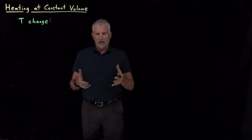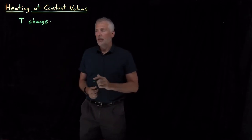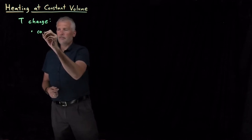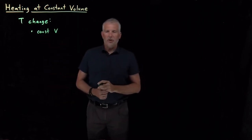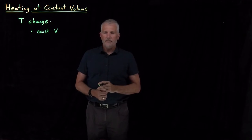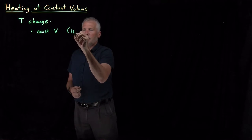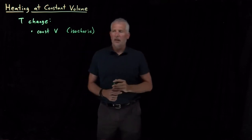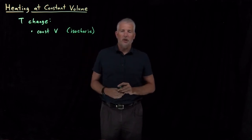For example, if I imagine taking a box of gas or anything and heating it up, changing its temperature, I could do that at constant volume, not allowing the volume of the gas to change as I heat it up, and then the pressure inside the box will increase. The fancy word for a constant volume process is isochoric. So instead of isothermal when I don't allow the temperature to change, isochoric means I don't allow the volume to change.